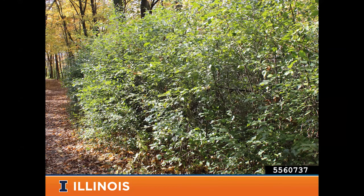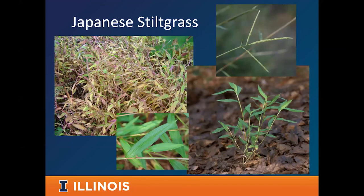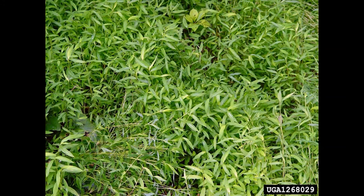In the southern part of the state and moving north, we have Japanese stiltgrass. Found very commonly in the southern third of the state but moving farther north — it's been found close to the Wisconsin line, so it can grow throughout Illinois. It's an annual warm-season grass that likes growing in the understory and forms really dense mats. If you think it may be Japanese stiltgrass and you see this small grass with short fat leaves, it's an annual so it will pull up very easily — most look-alike grasses are perennials with better root systems that won't pop out.